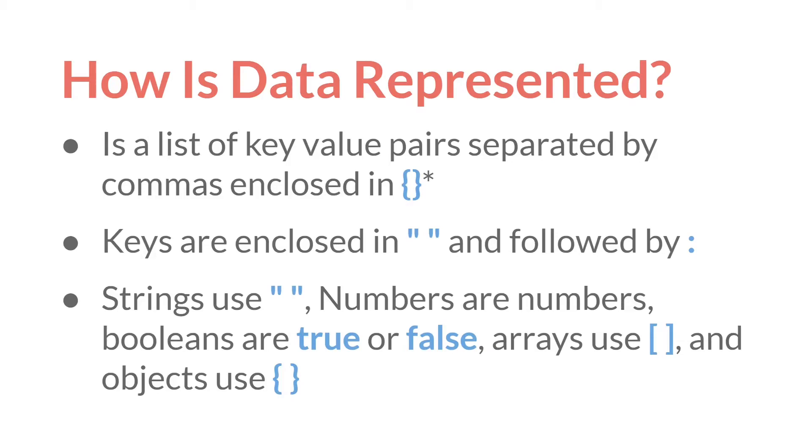Keys are enclosed in quotation marks and followed by a colon. Strings use quotation marks. Numbers are numbers. Booleans are written as true or false in all lowercase. Arrays use the square brackets and objects use the squiggly brackets.